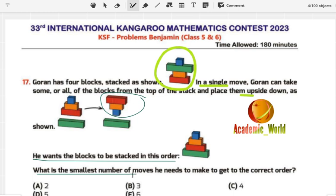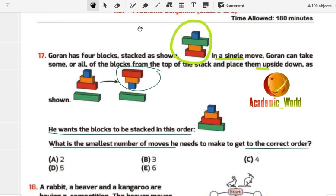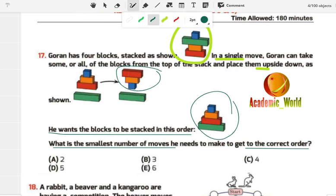He wants the blocks to be stacked in this order. The question is: what is the smallest number of moves he needs to make to get the correct order? For that purpose, you need to make the blocks in this format. You can see here the larger green block should be at the first stage, then red, then orange, then blue.